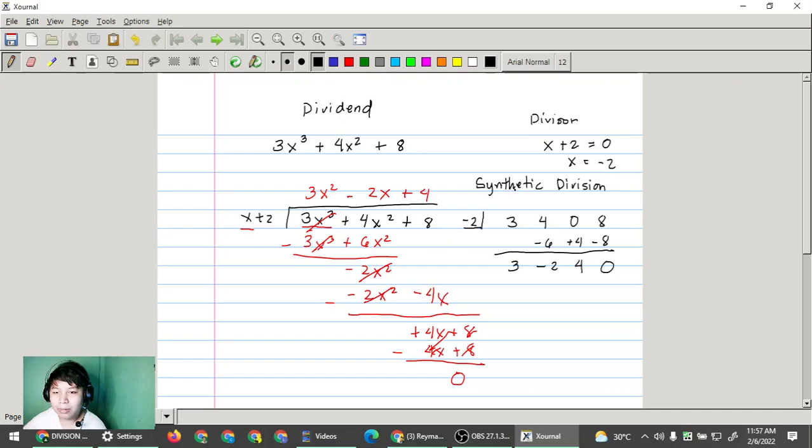So anong ibig sabihin yung mga numbers na ito? Meaning, ito yung remainder na ito. The remainder is 0. Ito na lang kukunin natin yan. So this will become 3x squared. Since x cubed tayo nagsimula, divided by x, bababa lang siya ng isang letter. So next is 2x and then the last one is plus 4.